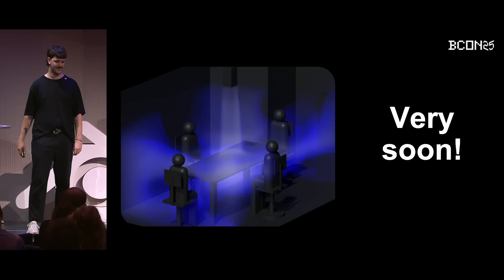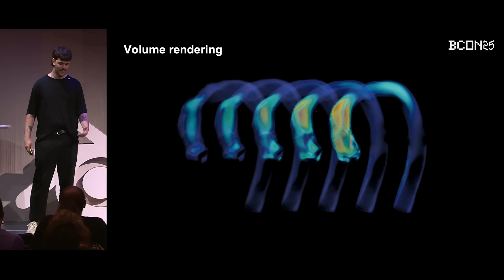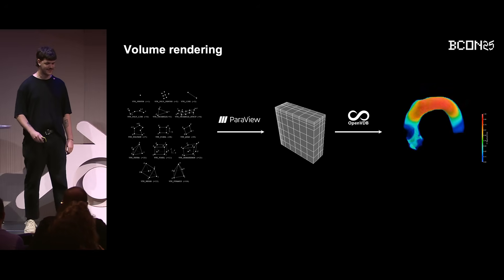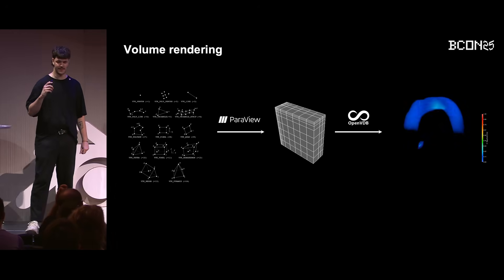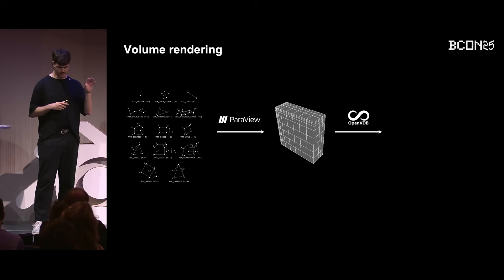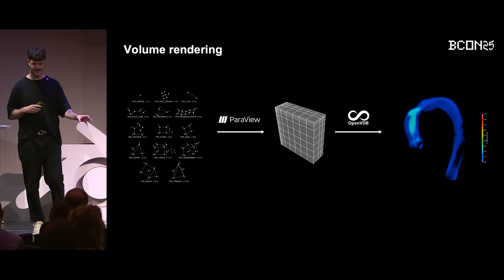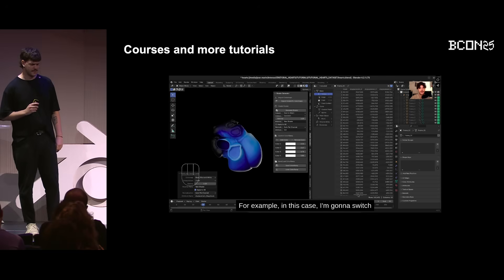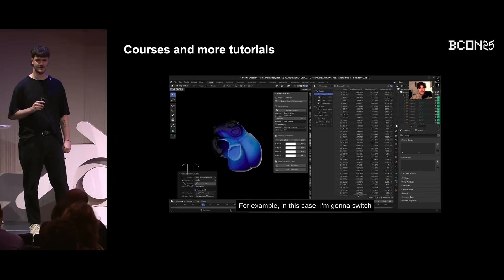I'm incredibly proud of where Syblend is today, but we're just getting started — we have some major features coming very soon. The next frontier is true volume rendering of simulations in real time. We're building a direct pipeline to convert volumetric grid data from Paraview into the industry-standard OpenVDB format. This will allow you to render simulations like thermodynamics, medical scans, and fluid simulations directly in Blender. Essentially, you grab the geometry and topology, turn it into a uniform grid layer, and then convert it into something Blender can read. I also recognize that Blender can be intimidating for users from a purely scientific background, so I'm developing a complete series of tutorials and courses specifically for scientists and engineers.